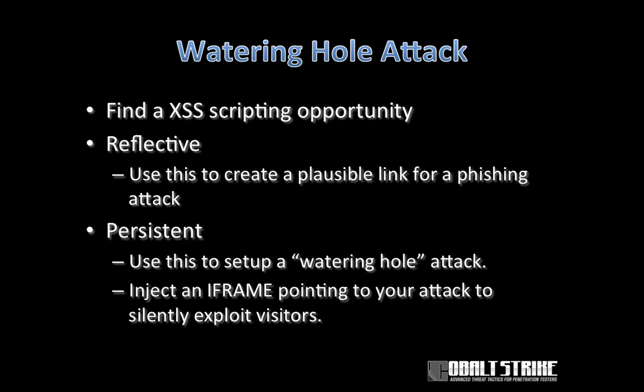So how do we set up a watering hole attack? One option is you could hack into a web server and change the HTML of a file on the site to serve your malware. Another option is you can look for a cross-site scripting opportunity. There are two kinds: reflective cross-site scripting lets you specify code to inject into a website as part of a parameter in a URL, and it only applies to anybody who clicks that specially crafted URL — great for phishing attacks. Persistent cross-site scripting lets you embed arbitrary HTML onto a website to serve exploits to anybody who visits. The easiest way is to embed an iframe into the site that points to your favorite exploit.